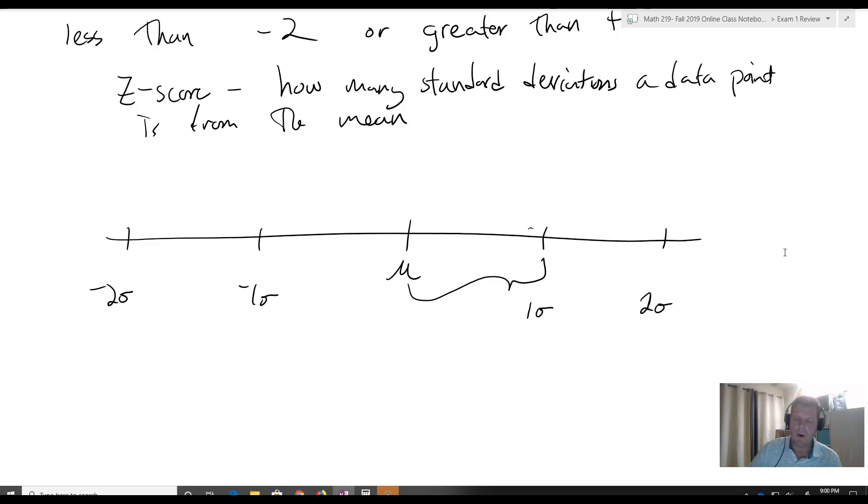What we mean by something being an outlier is it's fairly rare. If we're more than two standard deviations away from the mean, then we have something that's rare enough to be called an outlier.